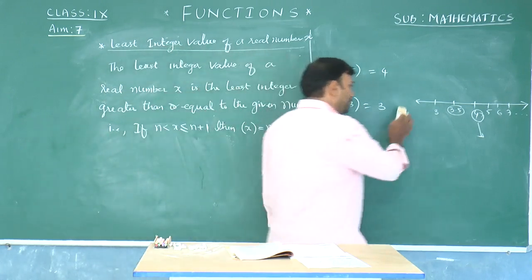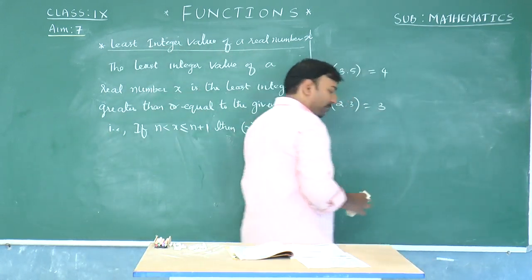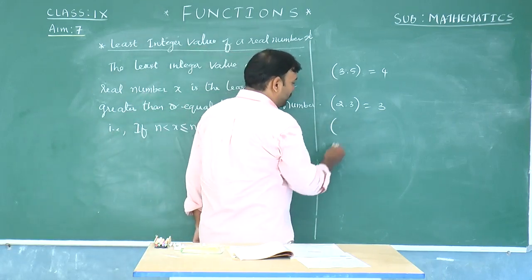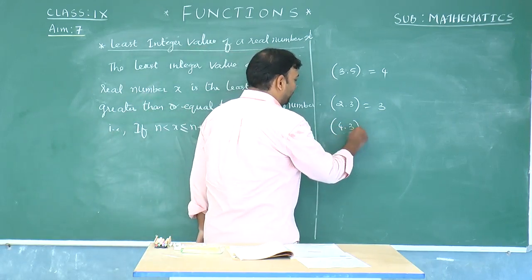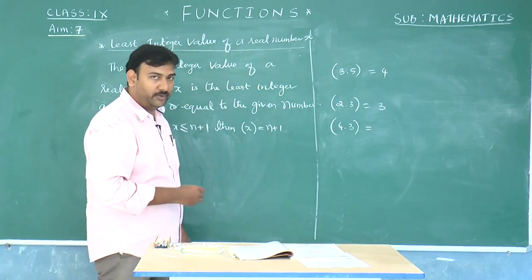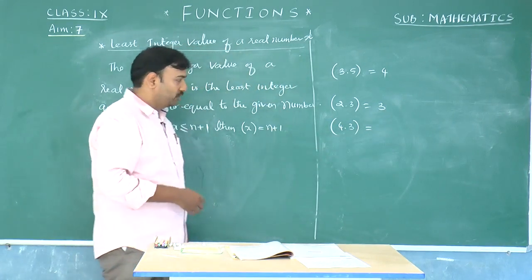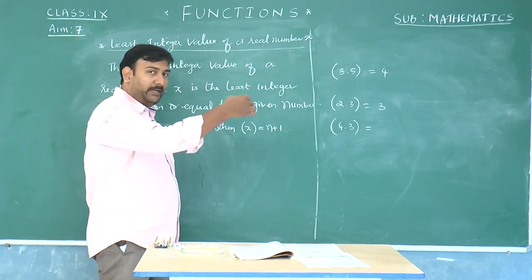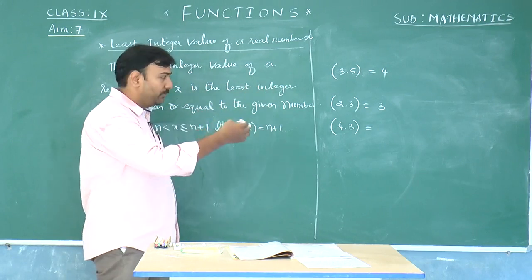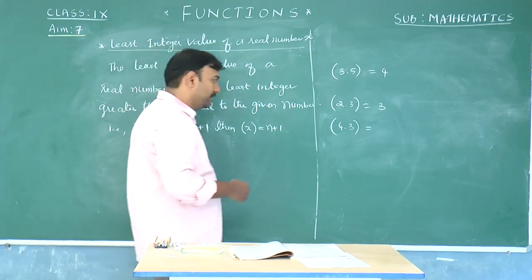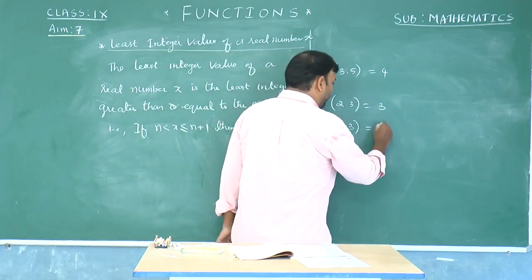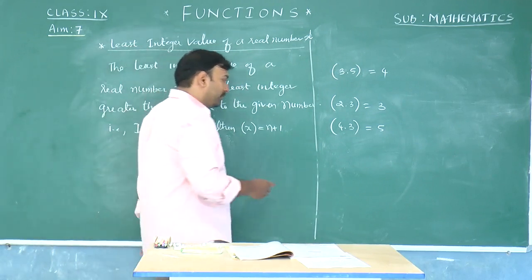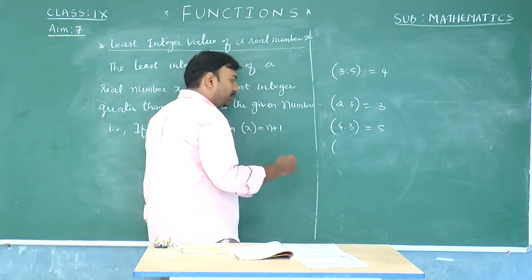Instead of going with the number line, always go with the number on the right side. For example, the least integral value of 4.3 is going to be the number on the right side of the number line. 4.3 lies between 4 and 5, and above 5 we have many integers — 5, 6, 7 and so on — but among them the least integer is 5. So the least integral value of 4.3 is 5. This is valid for any real number.